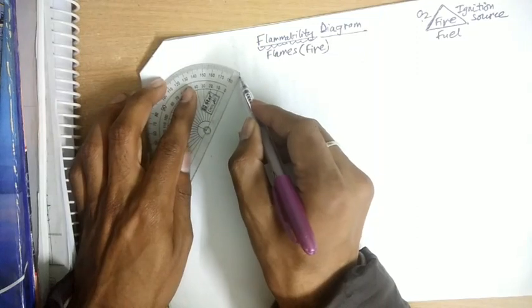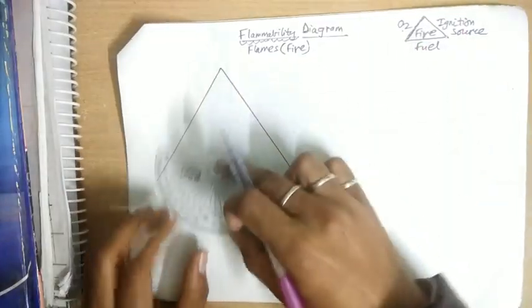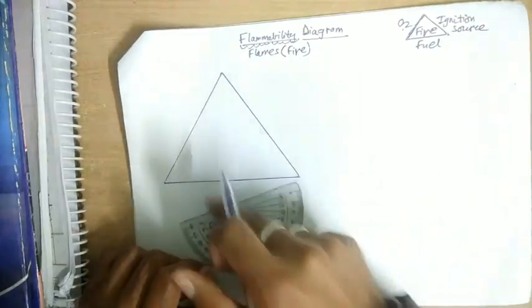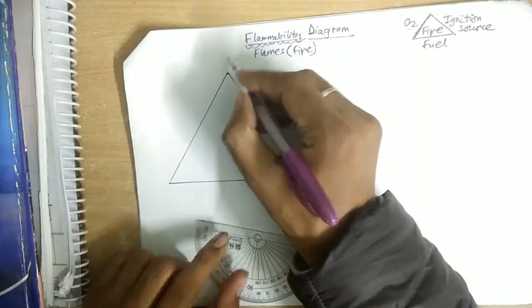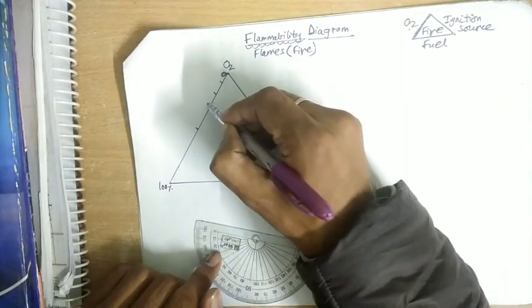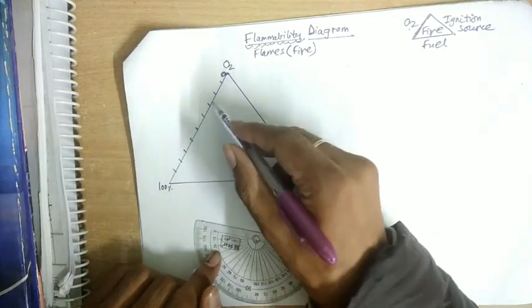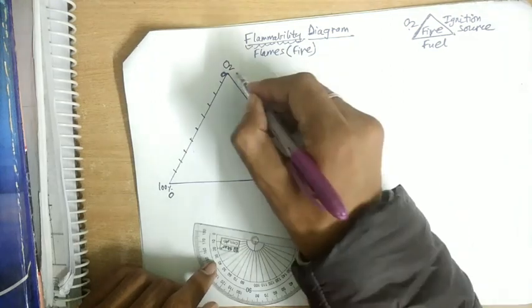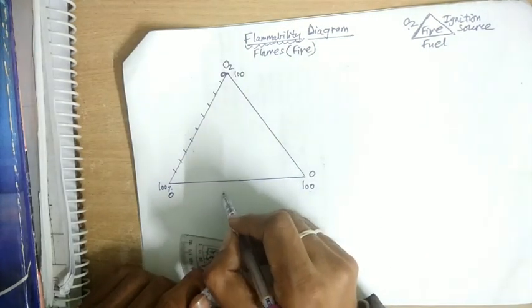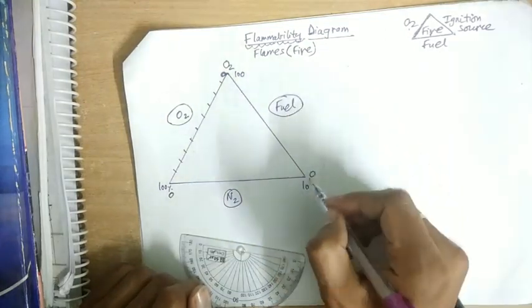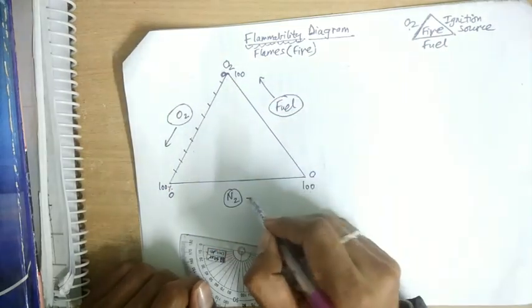We will draw a triangular ternary diagram because three components are important and can be represented at the three vertices. Oxygen is placed on one axis from 0 to 100%, with markings at every 10%. The three axes represent oxygen, an inert source such as nitrogen, and fuel, each running from 0 to 100%. Fuel increases along one side, oxygen increases along another, and nitrogen increases along the third.